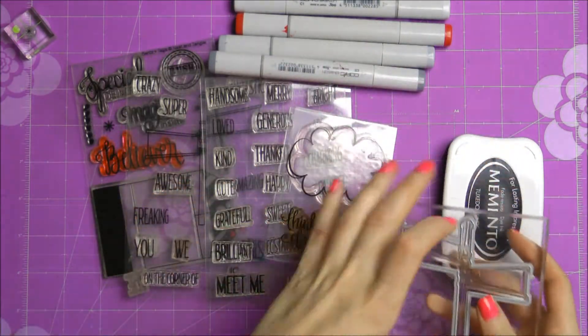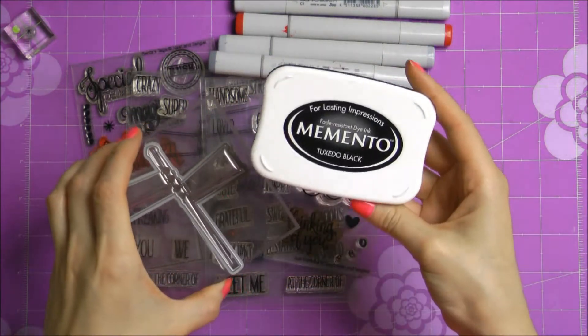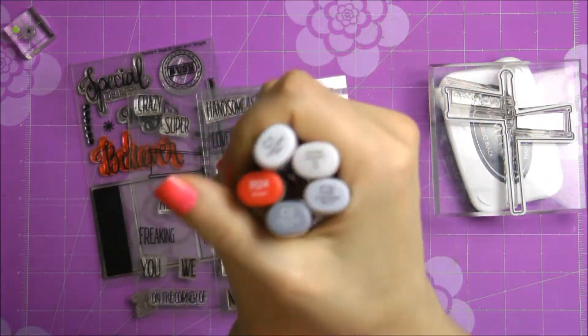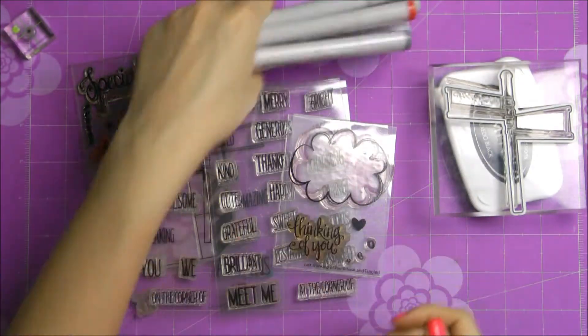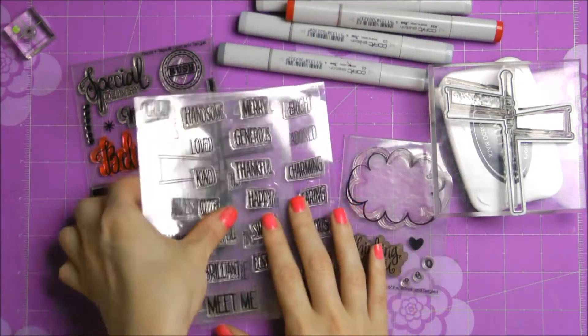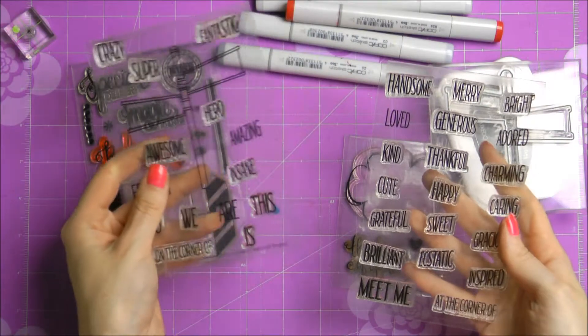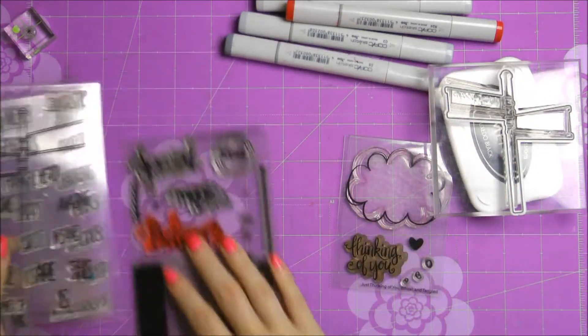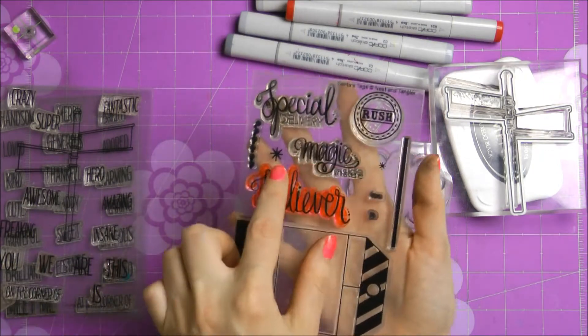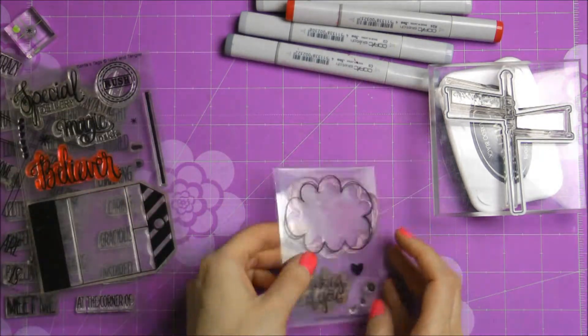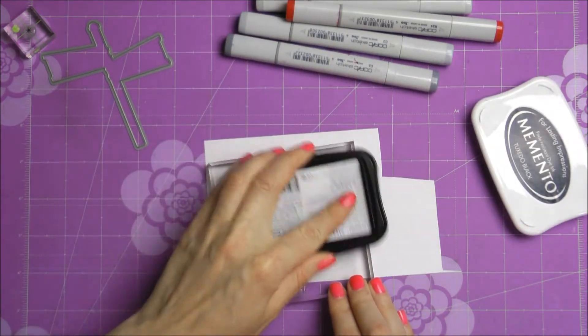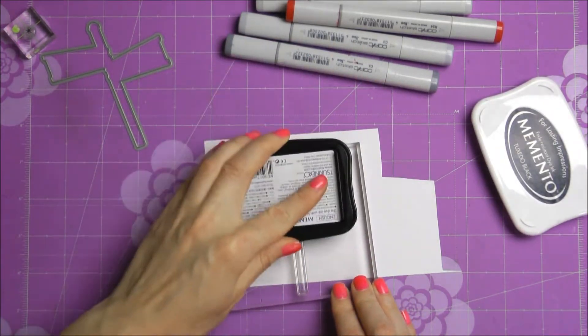So here I have a stamp and a matching die which are from the On The Corner set from Neat & Tangled. I also have some black Memento ink, some Copic markers for my coloring and also a few other stamp sets from Neat & Tangled. I have the On The Corner stamp set along with the On The Corner editions, the Santa tags and Just Thinking Of You stamp set, and I'll be using a few stamps from all of these sets to create my card today.